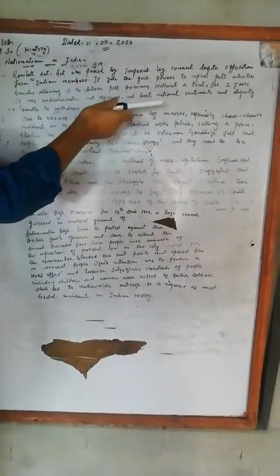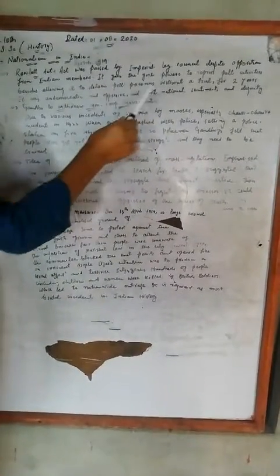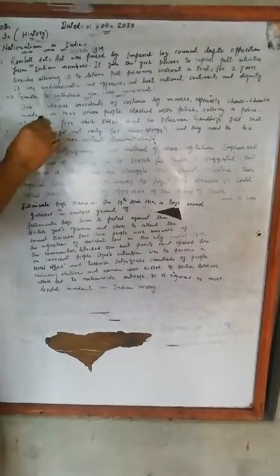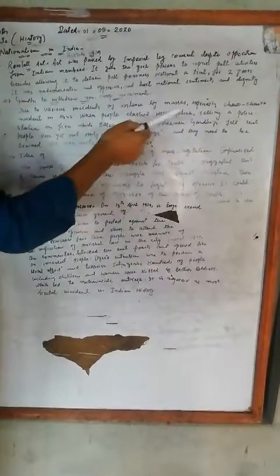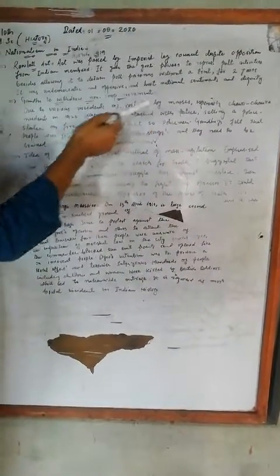This hurt national sentiments and dignity, giving rise to national movements. The Non-Cooperation Movement emerged in response. Due to various incidents of violence by masses, especially after the Chauri Chaura incident in 1922, people protested.